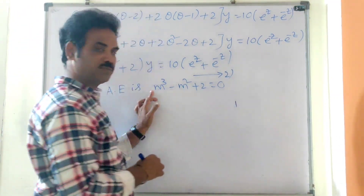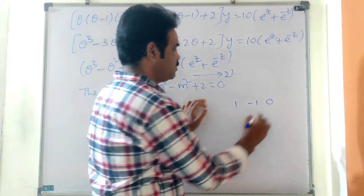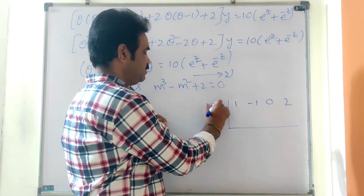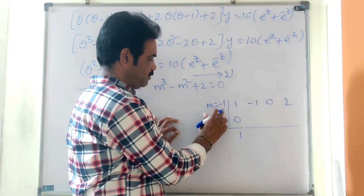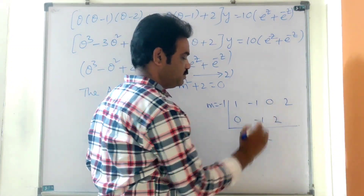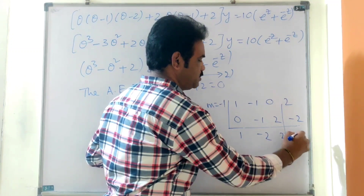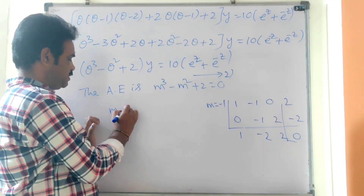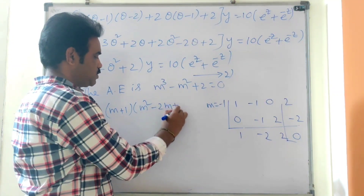For the auxiliary equation, the coefficients are: m³ coefficient is 1, m² coefficient is −1, m coefficient is 0, and constant is 2. Testing m = −1: (−1)³ + (−1)(−1)² + 0 + 2 = −1 − 1 + 0 + 2 = 0. Yes, m = −1 is a root, so (m+1) is a factor. The remaining factor gives m² − 2m + 2 = 0.